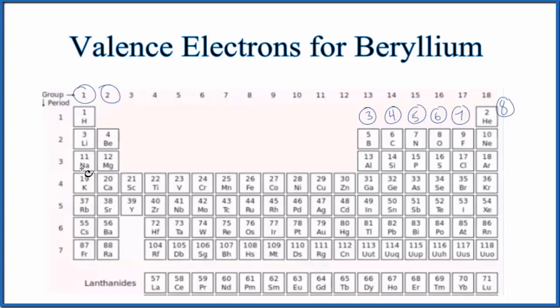The first is to look at the periodic table. So we look at the periodic table and the groups. They help us understand the number of valence electrons for an element. Group 1, all of these have one valence electron. Group 2, they have two valence electrons.